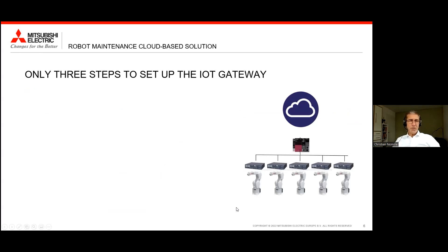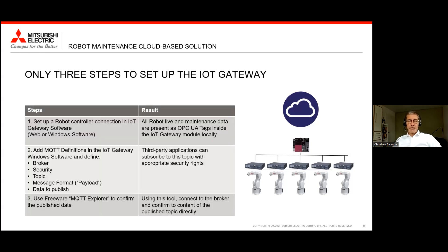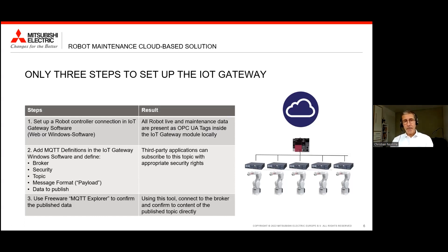As I promised, I would like to go through the three steps needed to set up the IoT gateway. First, we would use a website on our IoT gateway to configure a robot connection — it's just one click away and I will show that to you live. As a result, we will see all robot life and maintenance data presented in a structured OPC UA view.